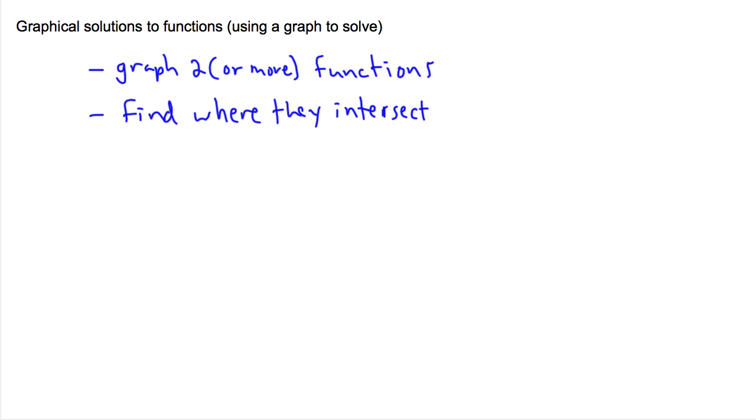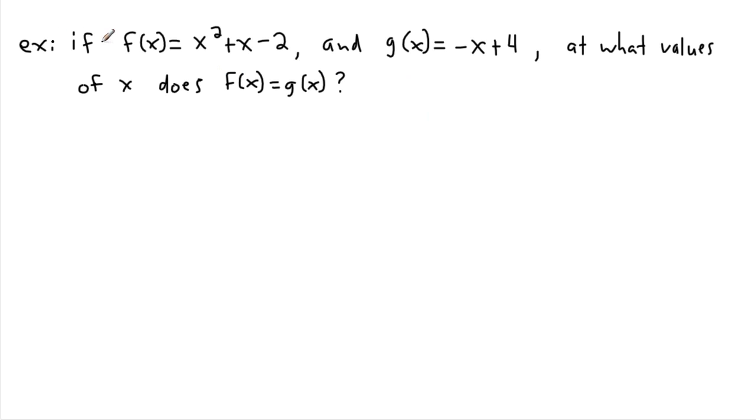So I'm going to give you a practical example. I made one up here that said if f of x is x squared plus x minus 2, I've used this example before, but I'm making f of x be this, and I've got a new function, something called g of x, which is negative x plus 4. And I'm asking at what values of x does f of x equal g of x. And this may sound really complicated, but basically what I'm asking to do is set this equation equal to this one.